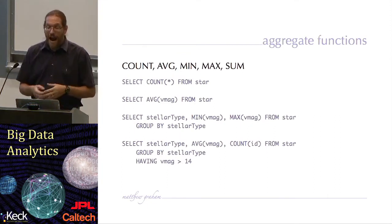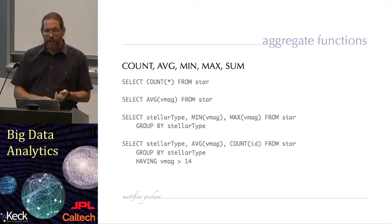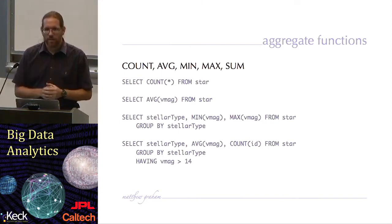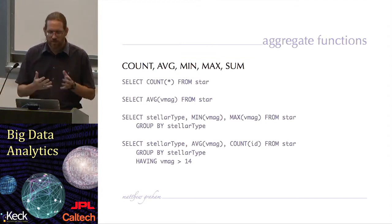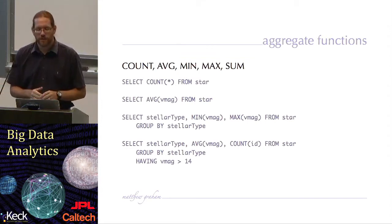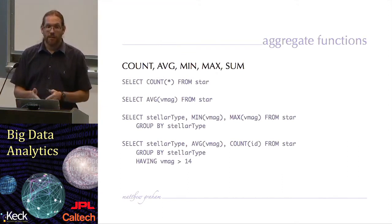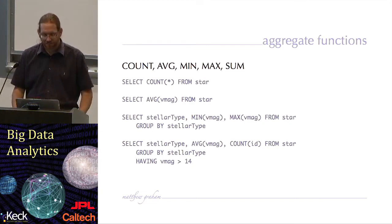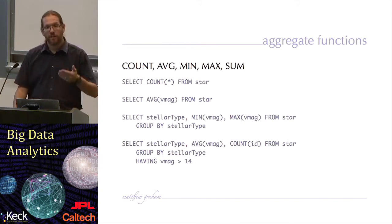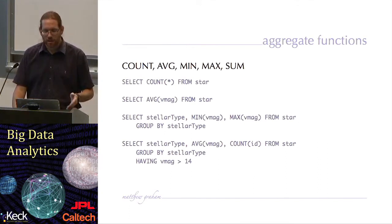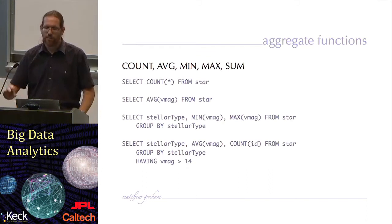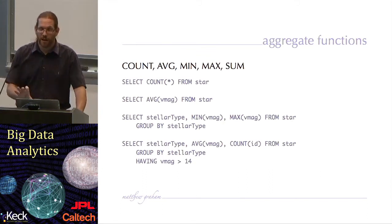In SQL, you have aggregate functions: counting, averaging, getting the minimum value, the maximum value, or a summation. These work on the group of information defined by the where predicate or the particular column name you've given. So if I want to know how many rows I have in my database table, I would do select count, with either a column name or the asterisk wildcard, from my table name. The second operation will give me the average value of a particular column in my data. I haven't specified a where predicate, so it'll use all values in the column, but I could restrict that to a smaller set.